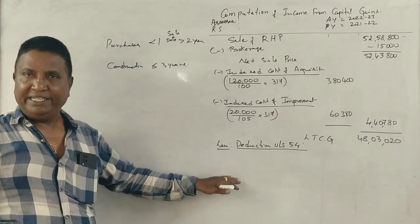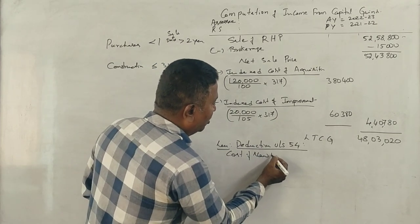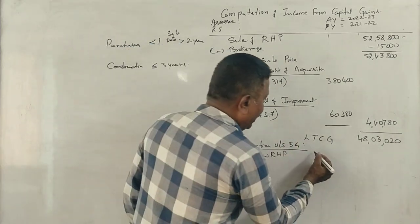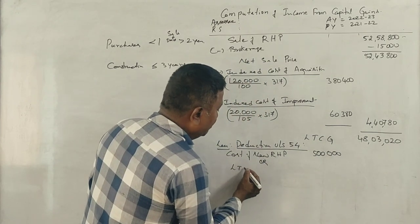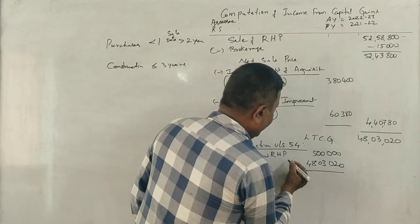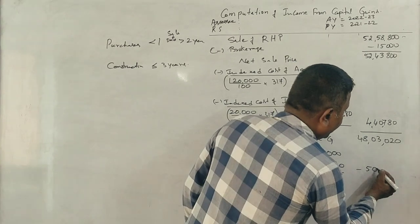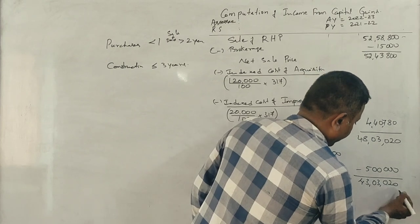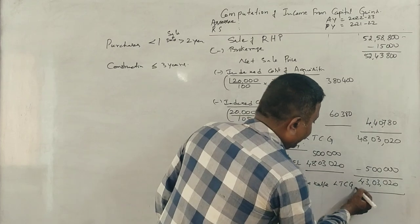The cost of new residential property is Rs. 5 lakh. The long term capital gain is Rs. 48,03,020. So the deduction under Section 54 is Rs. 5 lakh, which is the cost of the new house property. This gives us the taxable long term capital gain of Rs. 43,03,020.